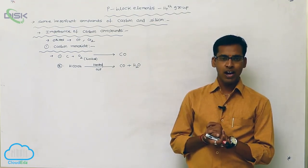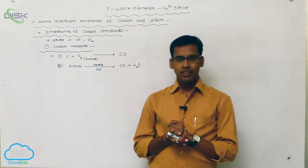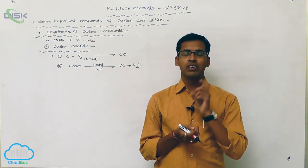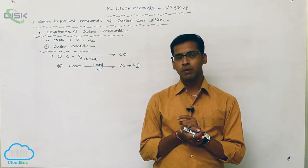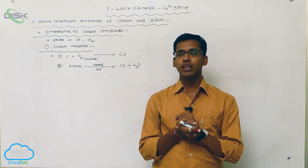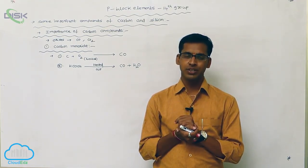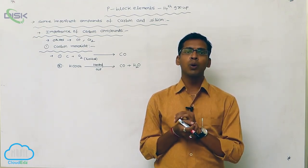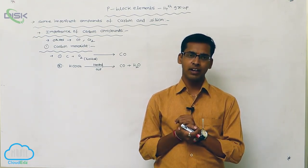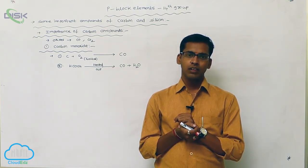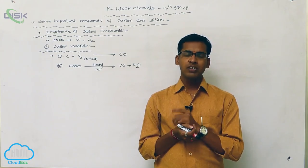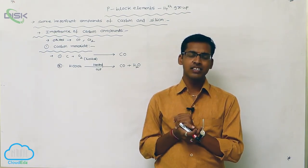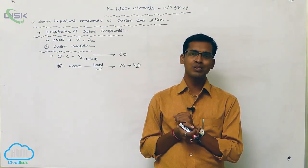In carbon monoxide, two types of pi bonds and one sigma bond are present. It undergoes sp hybridization and contains one lone pair of electrons. So it has donating capacity — it acts as a Lewis base.